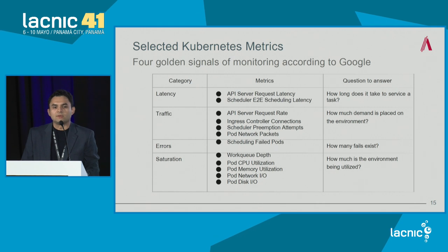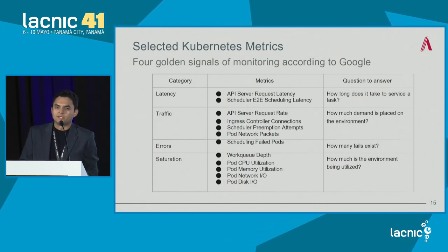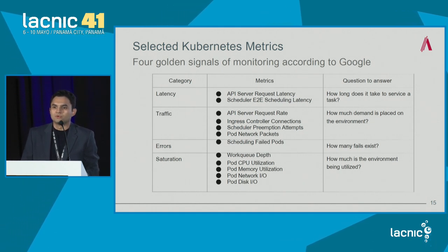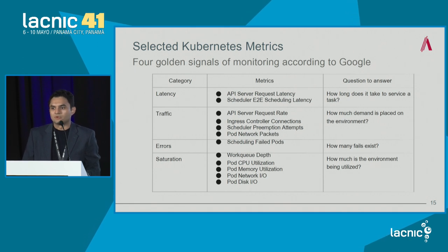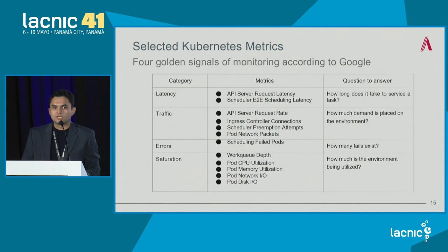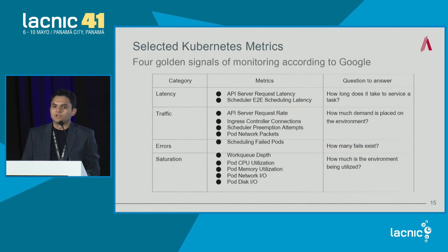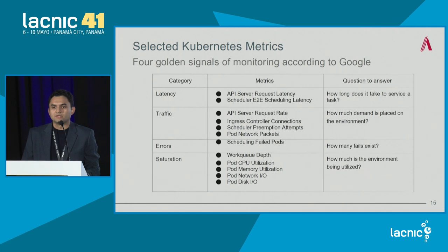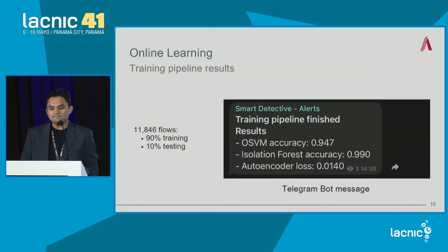It's not only important to have metrics and time series analysis — it's important to define them. We defined over 20 metrics divided into four categories, which according to Google are the golden signals of monitoring: latency, traffic, errors, and saturation. Latency addresses how long it takes the environment to provide a service; traffic, how much demand is placed on the environment; errors, how many failures occur; and saturation, how much the environment is being used. Metrics measured include CPU, memory, network, disk, pod failure rates, API response latency, and more.